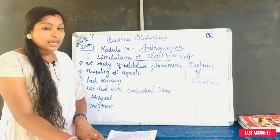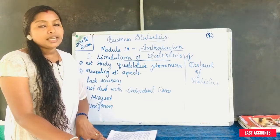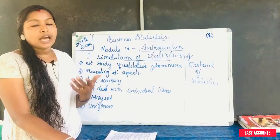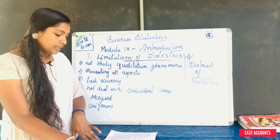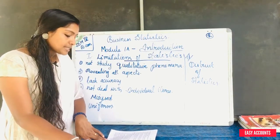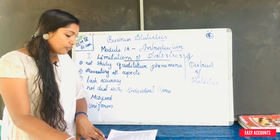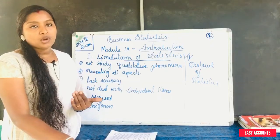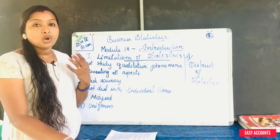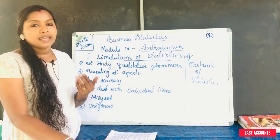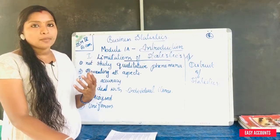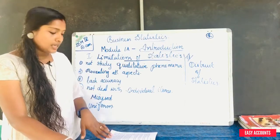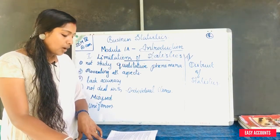Statistical laws lack accuracy. They are not as precise, correct, and true as the laws of physics or astronomy. Physics has its laws and astronomy has its laws — but statistical laws do not hold that level of precision. They are true only on average.